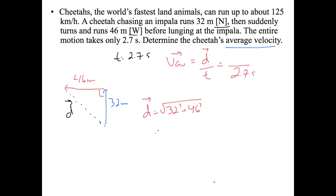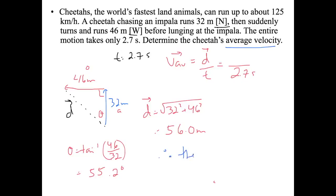That comes out to 56.0 meters. We also need an angle: theta equals inverse tan of opposite over adjacent, so inverse tan of 46 over 32, which gives 55.2 degrees. With two significant figures, the final answer is displacement equals 56 meters, 55 degrees west of north.